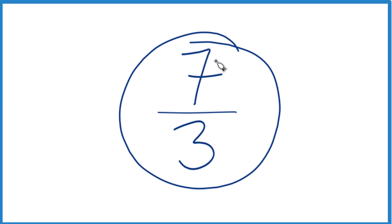Okay, 7 thirds. We want to write the improper fraction 7 thirds as a mixed number.